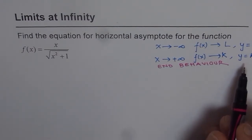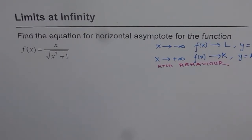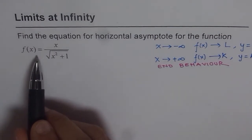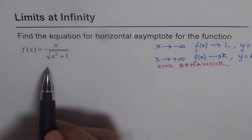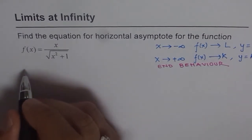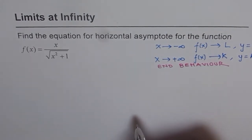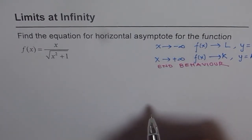Remember, 0 is also a value, so your function could approach the x-axis. With that in mind, let's solve the given problem. The function is f(x) = x divided by the square root of x squared plus 1. Let's simplify this first, then find the limits as x approaches positive and negative infinity.